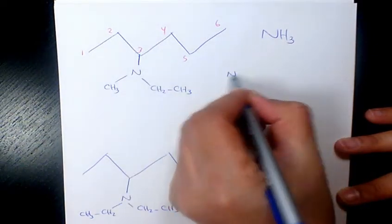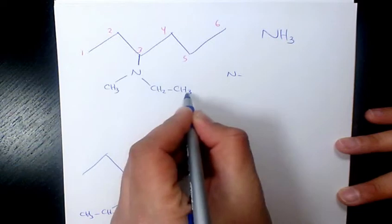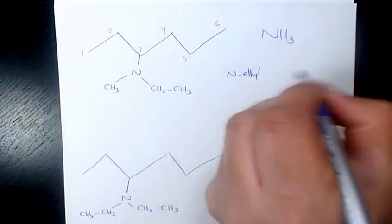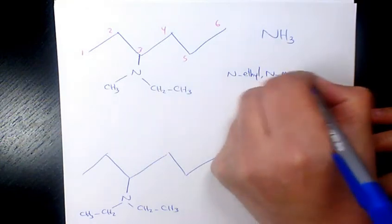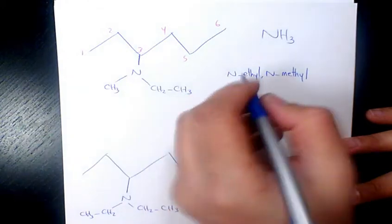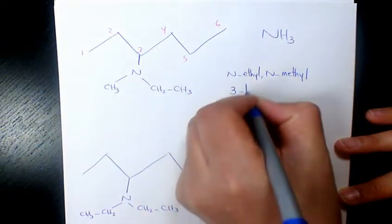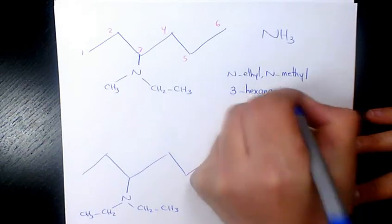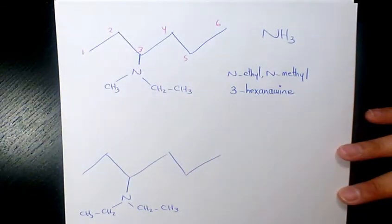So we're gonna have N-ethyl and methyl. We need to write ethyl first, and ethyl and methyl. And after that we have 3-hexanamine. That's going to be the name of this organic compound. Next one.